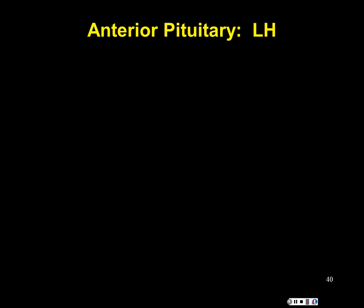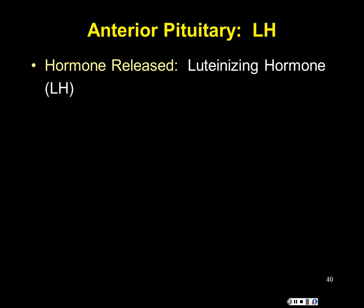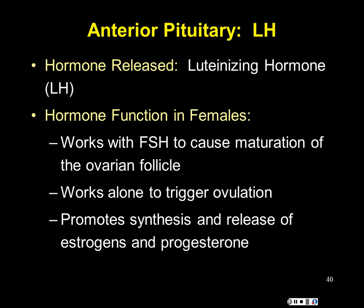Luteinizing hormone, LH, is the other gonadotropin. It was originally believed to be different in males and females, but researchers confirmed it's found in both. LH works in a positive feedback surge prior to ovulation, working alongside FSH as the follicle grows. Right before ovulation, there is a huge LH spike in a woman's blood that ruptures the follicle and releases the egg.